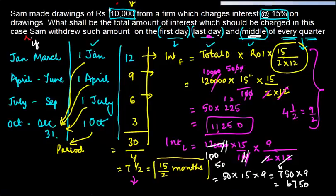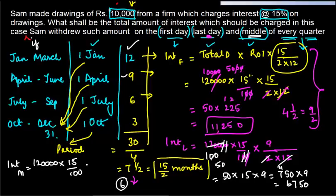When the drawings are made in the middle of the year, the average period is going to be 6 months. Interest when the drawings are done in the middle is equal to 40,000 into 15 by 100 into 6 by 12. This gives you 600 times 15, which is Rs. 9,000.